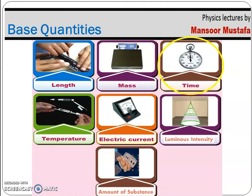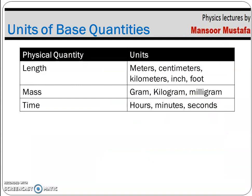The seven fundamental quantities are: length, mass, time, temperature, electric current, luminous intensity, and amount of substance. When measuring any physical quantity, a single quantity can have multiple units — for example, length can be measured in meters, centimeters, or kilometers, and mass in grams, kilograms, or milligrams. These multiple units are an advantage, but they can also create a problem because it is difficult to memorize all these units along with their relationships.